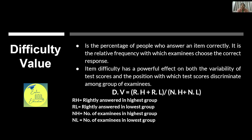The two key concepts to study are difficulty value and discriminative power. Difficulty value — 'kathinai ka star' — is the percentage of people who answer an item correctly. Note the inverse relationship: if 90% of students answer correctly, the item is very easy, meaning the difficulty level (kathinai star) is actually low. Higher difficulty value means easier question; lower difficulty value means harder question.